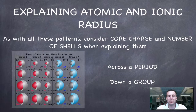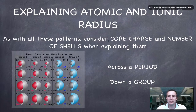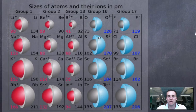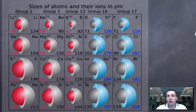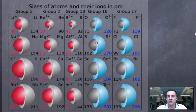Now, bearing in mind the idea of core charge, let's explain how atomic and ionic radius vary. With all these patterns — radius, ionization energy, and electronegativity — we consider core charge and the number of shells. Moving across period three, sodium through chlorine, the core charge is going up so electrons feel more nuclear charge, while the number of shells stays at three. So the outer shell electrons get drawn closer to the nucleus — atomic radius shrinks across a period. The same applies to ionic radius for positive ions, but when we reach negative ions they jump up because they're gaining electrons.